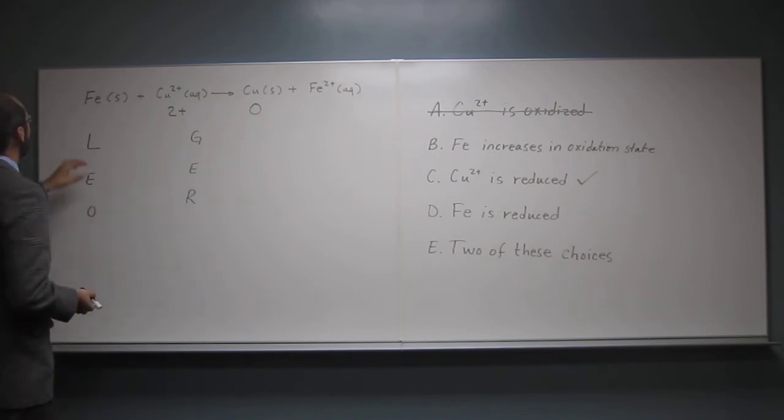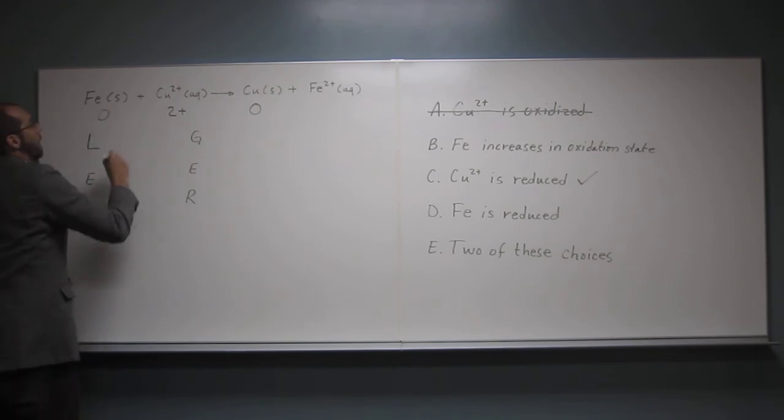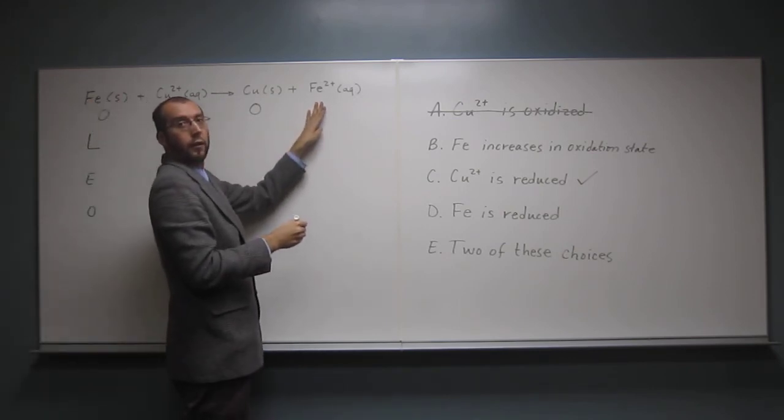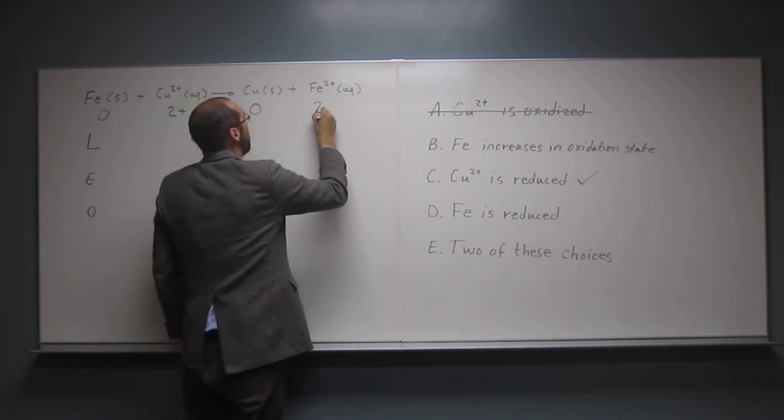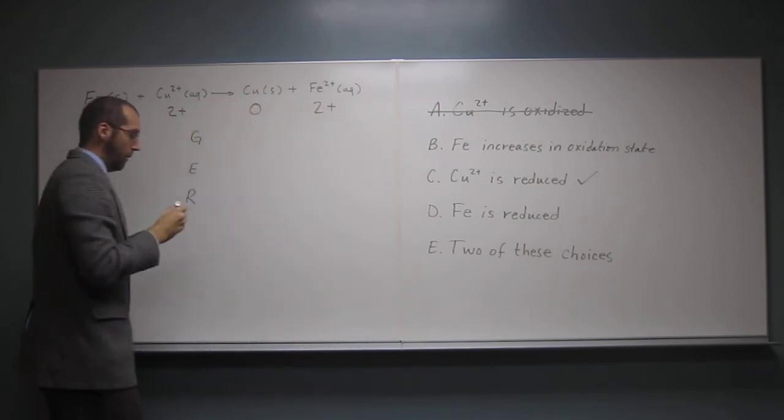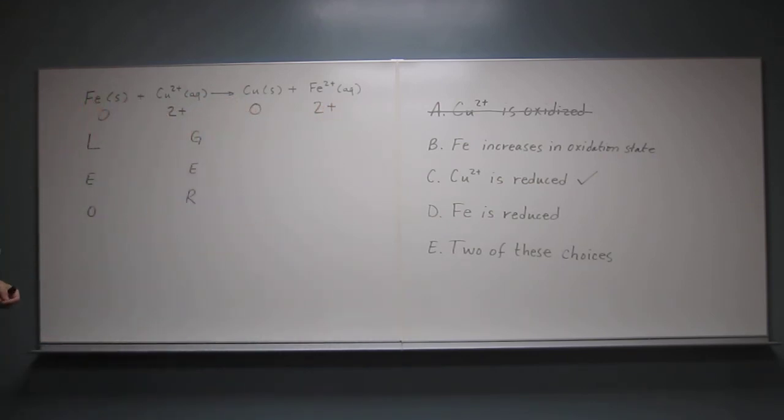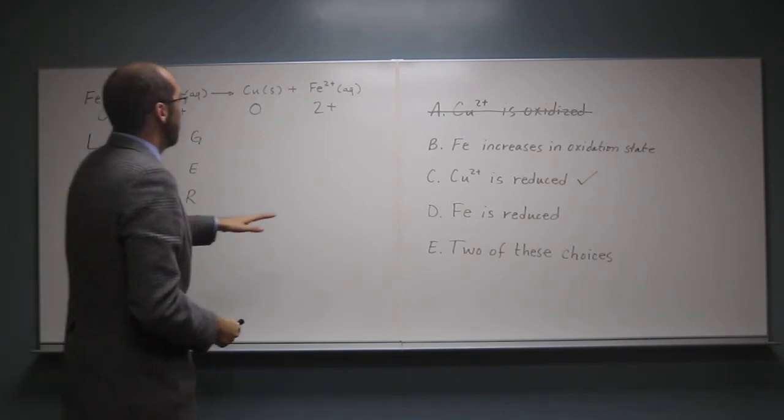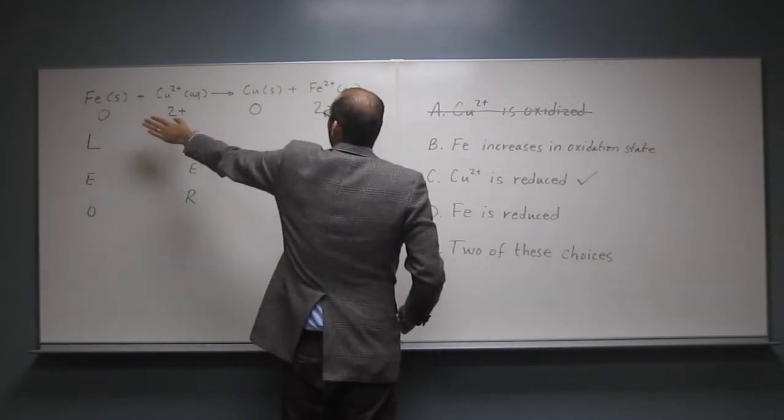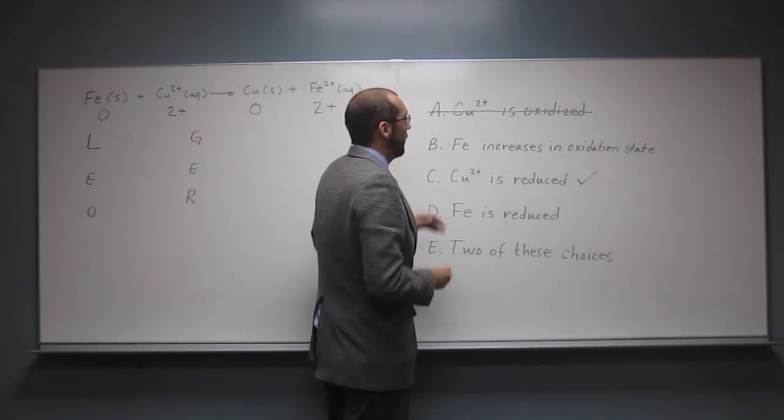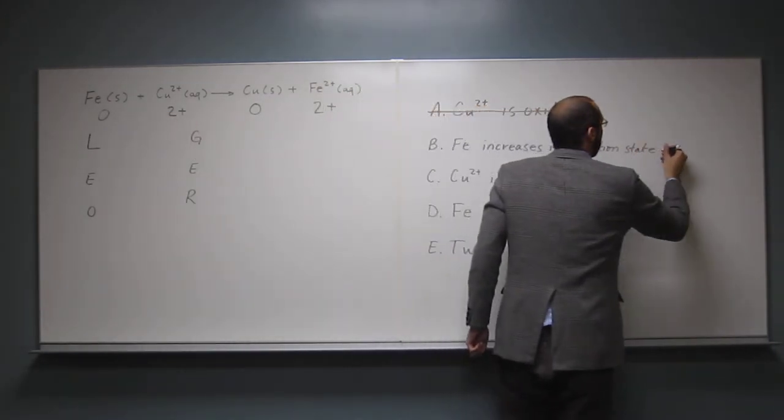So, now, let's look at this one. What's the oxidation state here? Zero. And what's the oxidation state here? Two plus. Okay. So, to increase in oxidation state, that means to go from a smaller number to a bigger number, right? So, did that happen with iron? Did it go from a smaller number to a bigger number? Yes. So, that is correct as well.